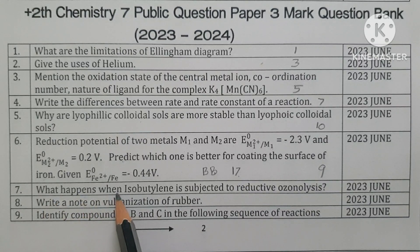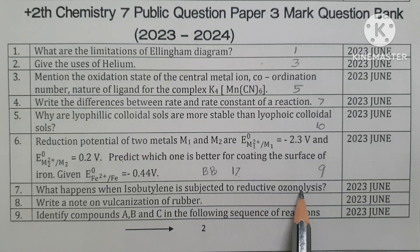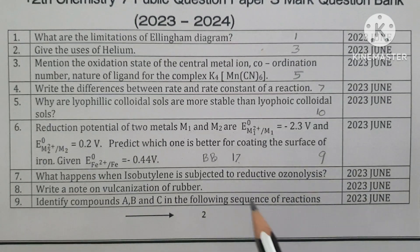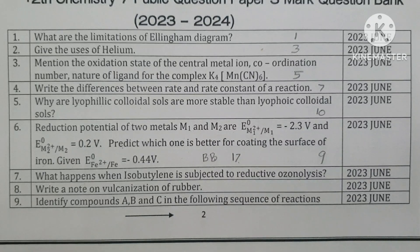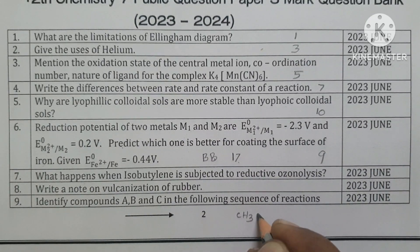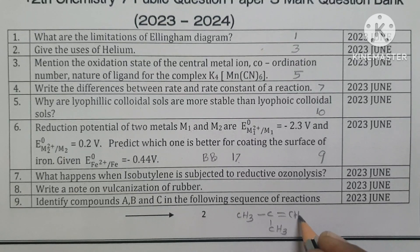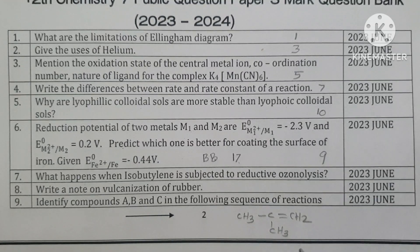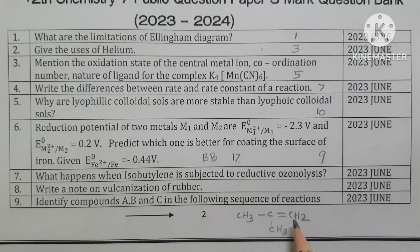What happens when isobutylene is subjected to reductive ozonolysis? The products are acetone and formaldehyde — this is the mixture. Isobutylene molecular formula: CH3 double bond CH2. This is the ozonolysis reaction giving acetone and formaldehyde.